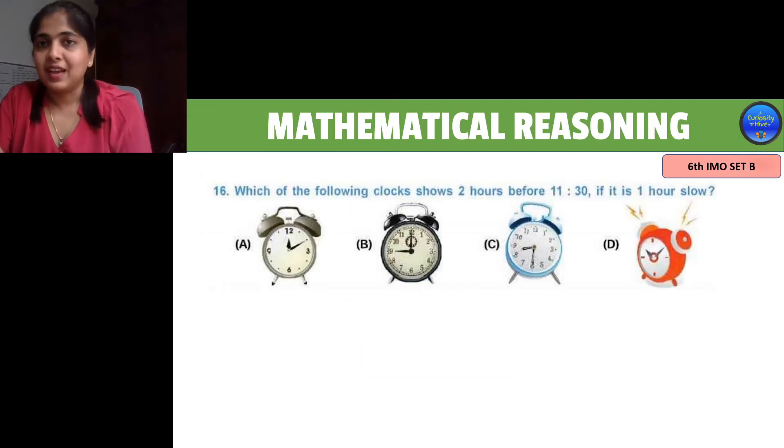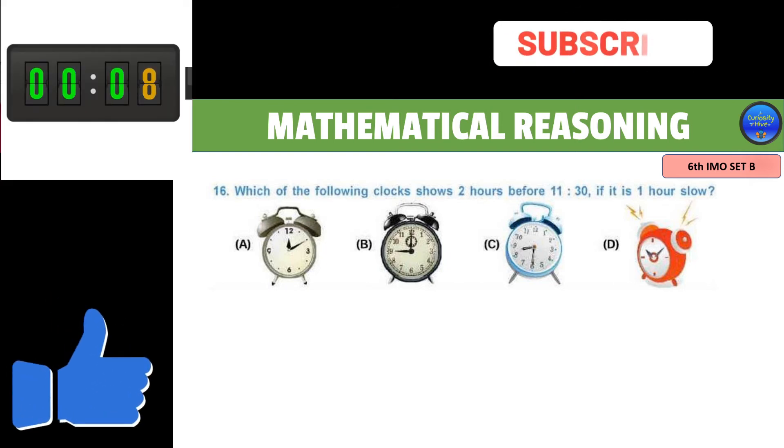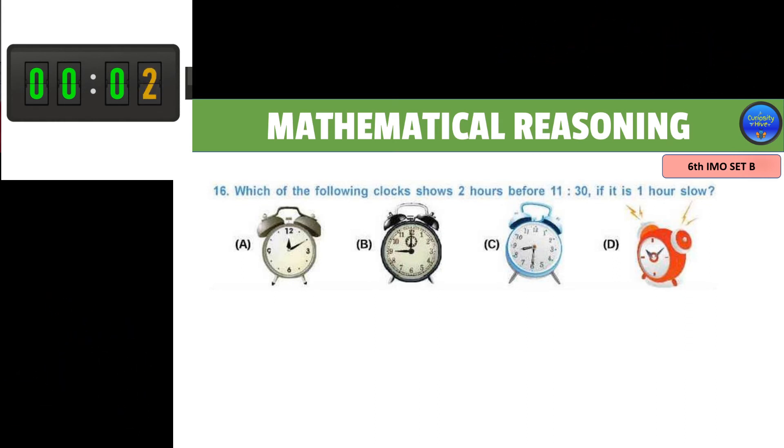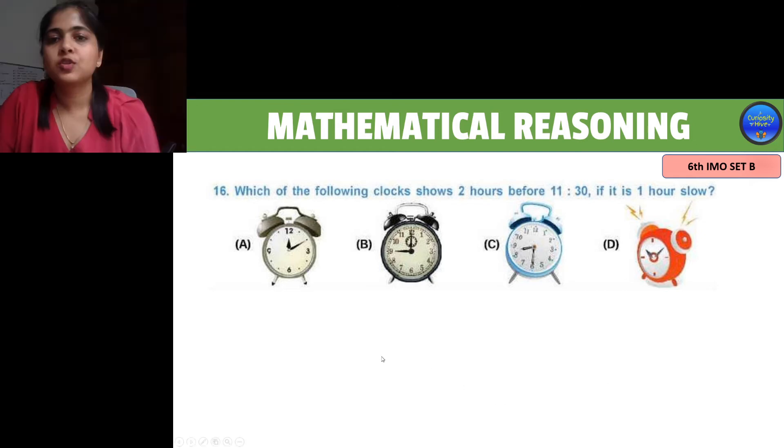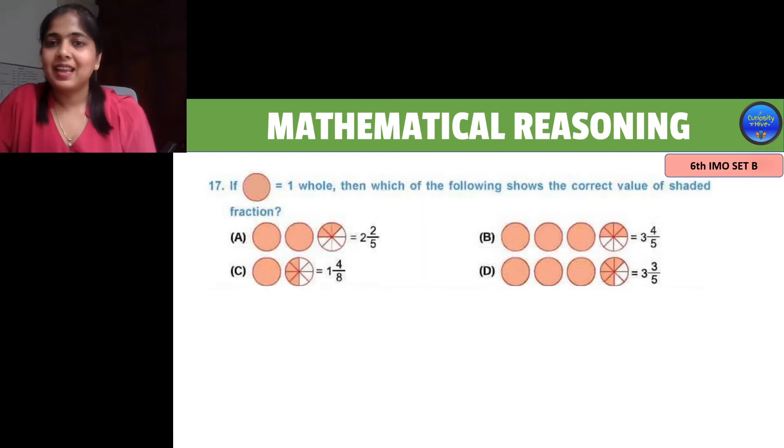The question asks to find the clock which was 2 hours before 11:30 if it is 1 hour slow. 2 hours before 11:30 is 11:30 minus 2 hours, which is 9:30. The clock that is 1 hour slow will show 9:30 minus 1 hour, which is 8:30, shown in option C.